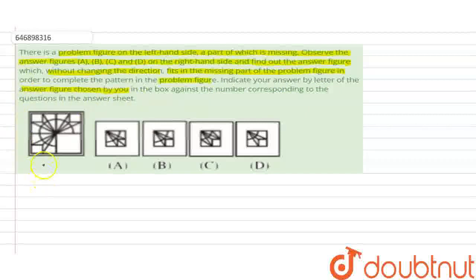In this question, we have a problem figure on the left hand side and answer figures A, B, C, D on the right hand side. We have to tell which answer figure, without changing the direction of the problem figure, can be kept in the missing part to complete the pattern.